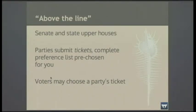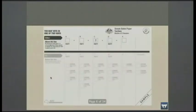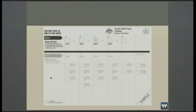In the Australian Senate and most of our states there's now an above-the-line voting system where parties submit a complete ticket — meaning they've pre-chosen the preferences for you. Voters can choose to use that party's ticket, so all preferences have been worked out ahead of time. From the Electoral Commission you can see the option of voting above the line — just put a one in one box and the rest is pre-decided — or voting below the line where you fill in all the boxes.